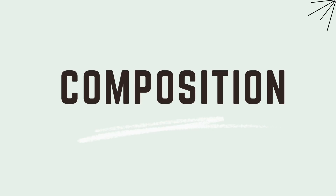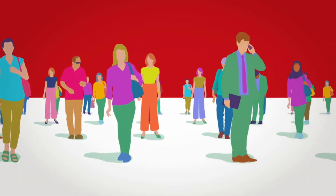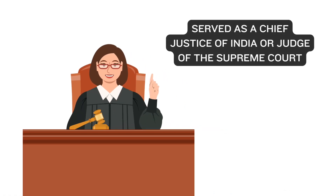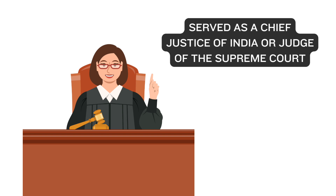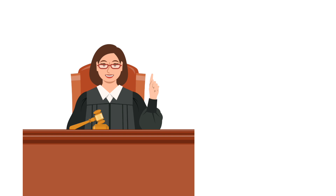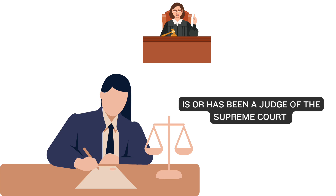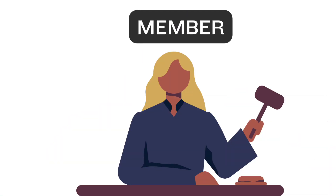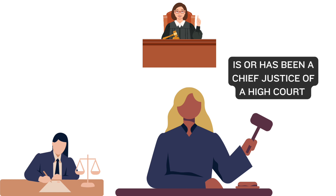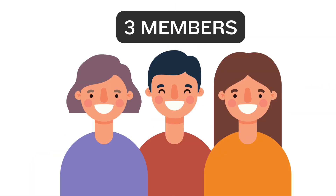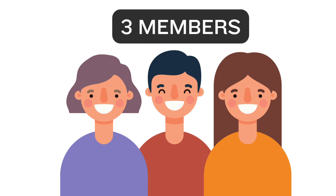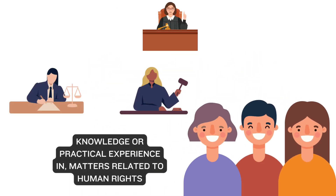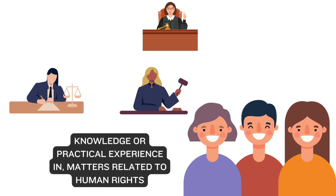The National Human Rights Commission is composed of: a Chairperson who has served as the Chief Justice of India or Judge of the Supreme Court; one member who is or has been a Judge of the Supreme Court; one member who is or has been the Chief Justice of a High Court; and three members, out of which one shall be a woman, appointed from individuals with knowledge or practical experience in matters related to human rights.